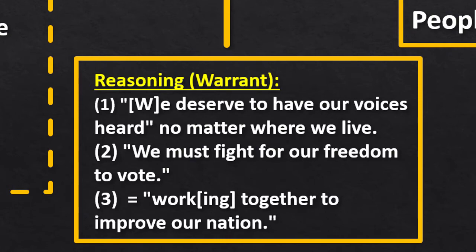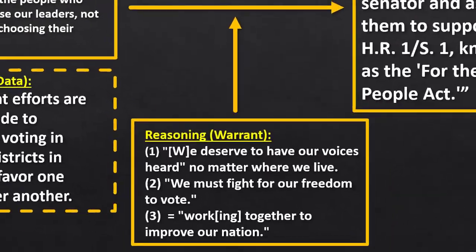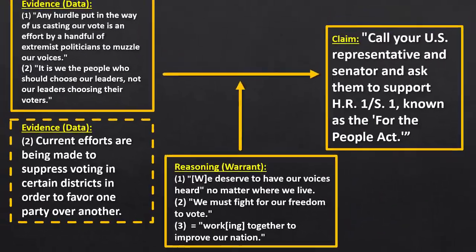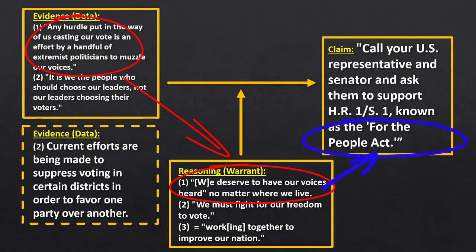And so you can see at this point — and that's the beauty of the Tuleman model — is that you can actually visualize the way that the logic works in the argument. Any hurdle put in the way of us casting our vote is an effort by a handful of extremist politicians to muzzle our voices. And because we deserve to have our voices heard no matter where we live, we need to have this act passed. It's we the people who should choose our leaders, not our leaders choosing our voters. But our leaders are actually trying to choose our voters.